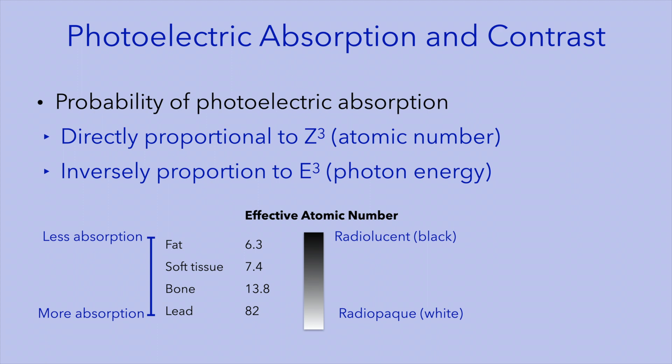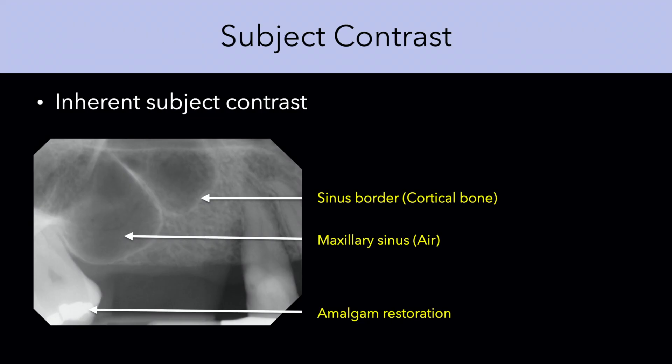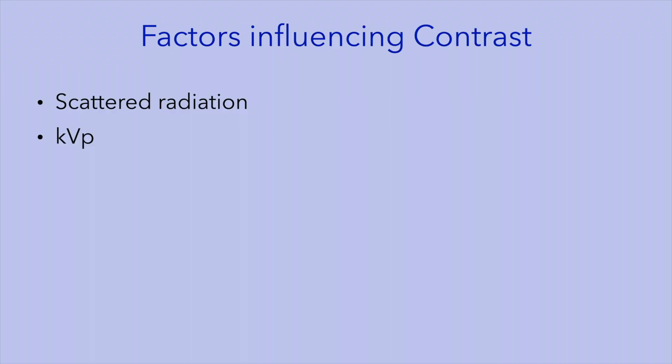Differences in photoelectric absorption provide us with radiographic contrast. When doing intraoral imaging, these differences are apparent, providing contrast between air in the maxillary sinus, the adjacent cortical bone, and between amalgam restorations and the adjacent tooth structure. There are two factors within our control that influence contrast: scattered radiation and the kilovoltage setting that we use for imaging.